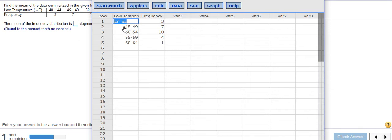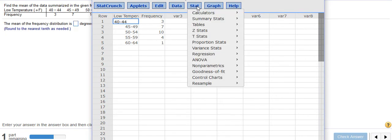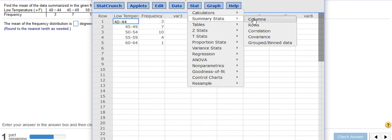But anyways, what I'm going to do now is I don't want to use 40 or 45. I want to use the number in the middle or the midpoint of that. So I'm going to go to Stat and Summary Stats. And then I'm going to drop down to Grouped or Bin Data.